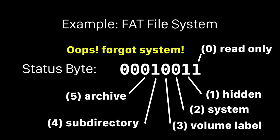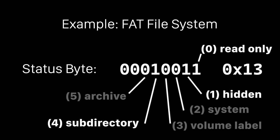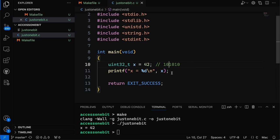Each of these bits means something different — it's a very compact way of storing status information. If this byte equals 19, that's 00010011 in binary, or 0x13 in hex. In the file system, that would mean we have a read-only hidden subdirectory. If I'm writing code that deals with this bit field, maybe I have code that only runs if the file is hidden — I need to test bit one. Or maybe code that runs for subdirectories — I'd need to test bit three.